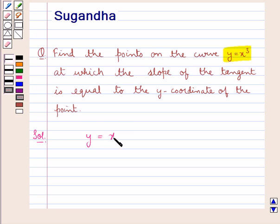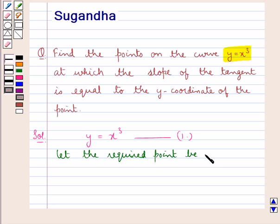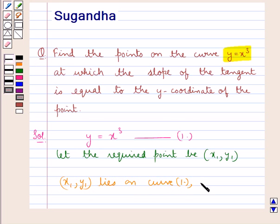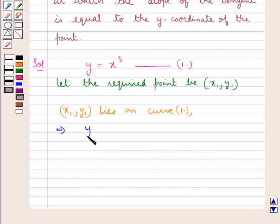The given curve is y equal to x cube — let this be equation 1. We have to find the points on this curve at which the slope of the tangent is equal to the y coordinate of the point. For this, we suppose the required point is (x1, y1), where x coordinate is x1 and y coordinate is y1. Since the point (x1, y1) lies on the curve given by equation 1, we have y1 equal to x1 cube — let this be equation 2.